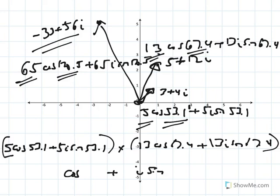The r value is just going to be the product of 5 times 13, which in this case is 65, whereas the theta value is going to be the sum of 53 and 67.4, which is 120.5.